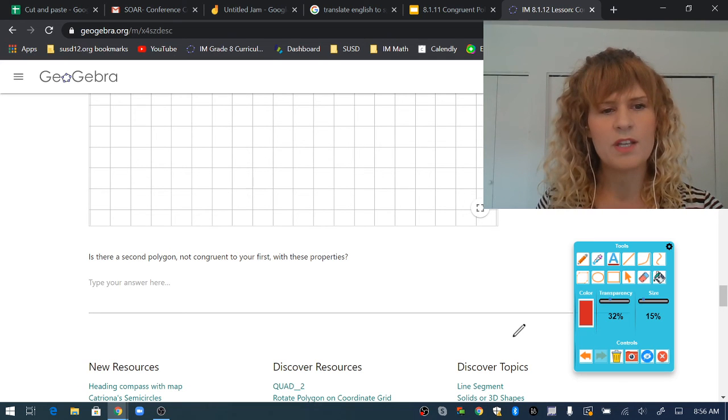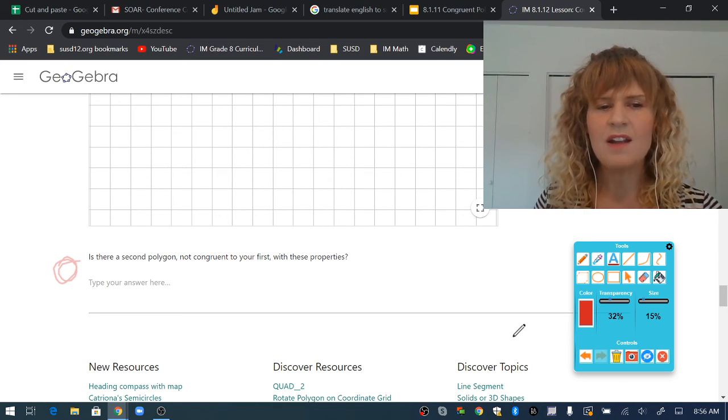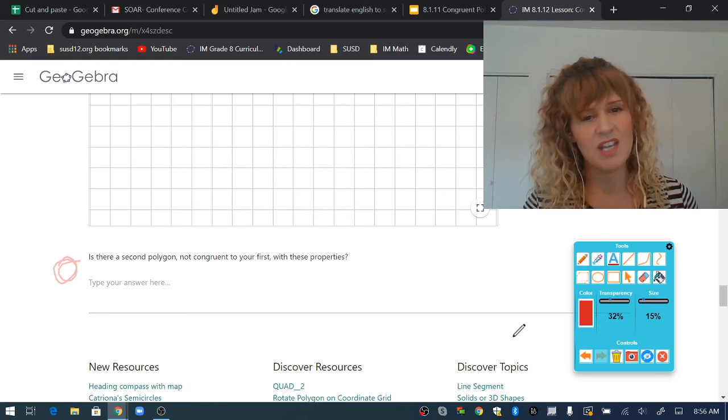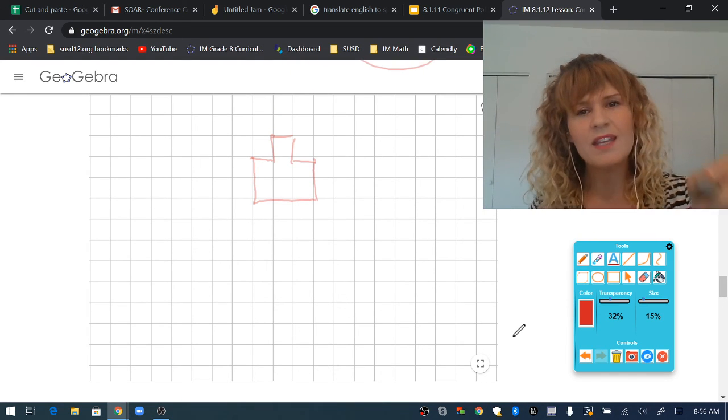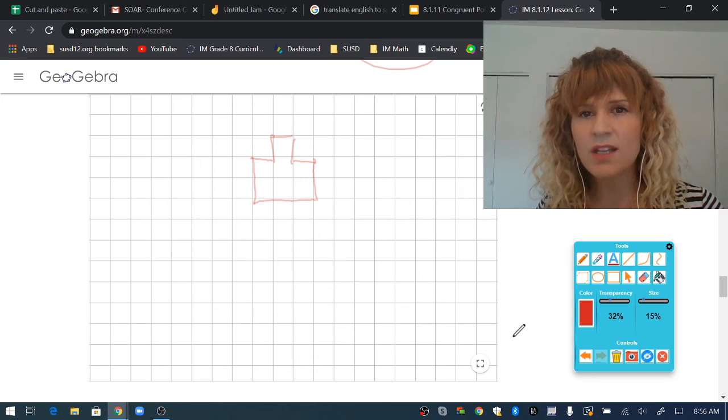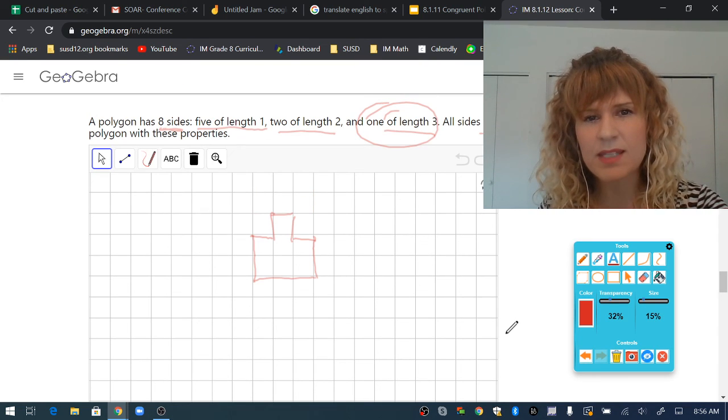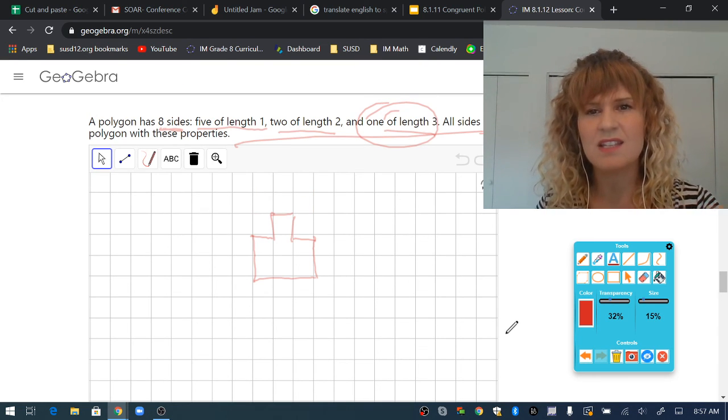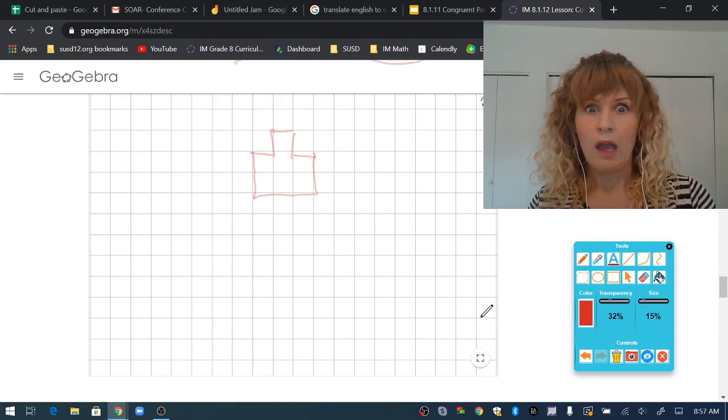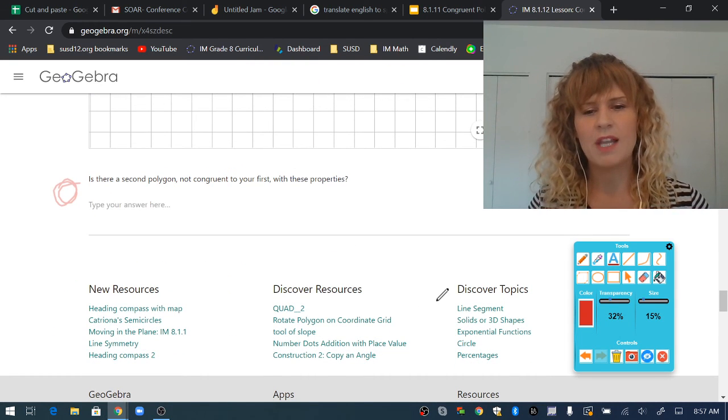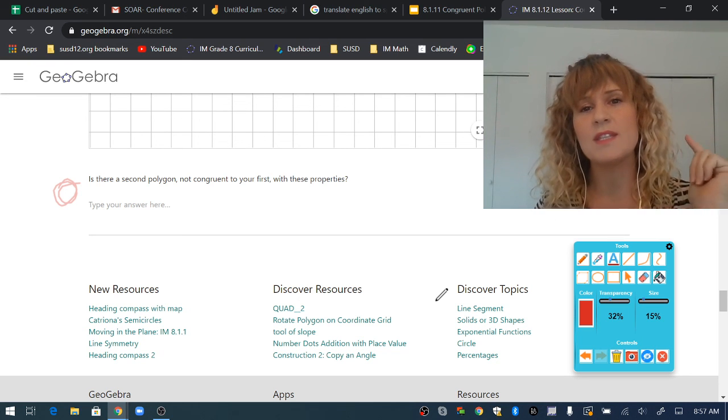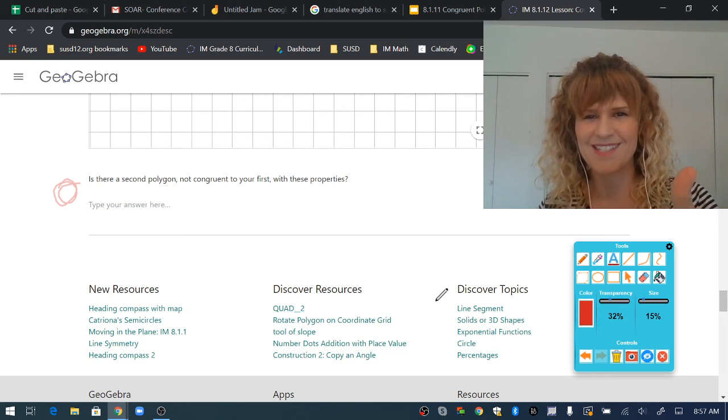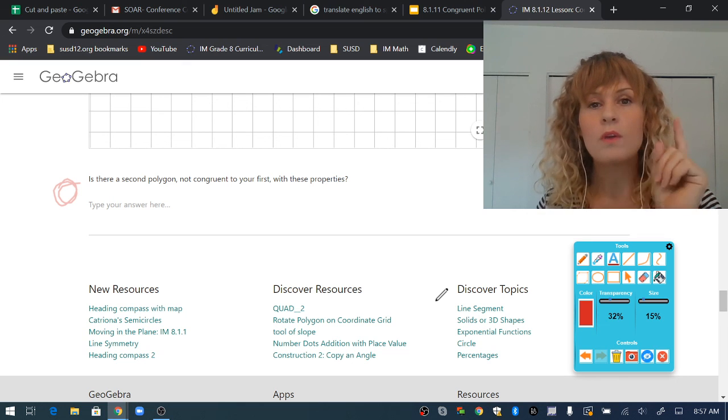Now you try and draw it. Then answer the question. Is there a second polygon not congruent to your first with these properties? Can you make another polygon with the same specifications that is not congruent? Go ahead and try it. Good luck, guys. I have to go. Sorry, it's a short video. Please read the instructions and do your best. Bye-bye. Oh, remember, it better be posted in the Google Classroom.